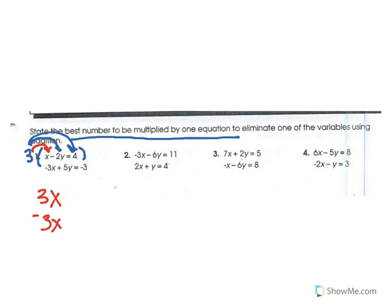So you do 3 times x, and then you do 3 times negative 2y, which would be negative 6y, and 3 times 4, which would be 12. And we don't have to do anything to the bottom equation because the whole purpose was just to find something we can multiply it by so that we can cancel out one of these. So now the x's cancel out.